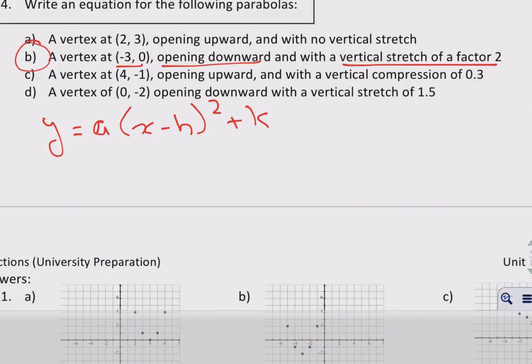In other words, I know that my h is negative 3, so that becomes positive 3. Remember, it's always going to be the opposite of the x coordinate. My k value is 0, so I'll just replace that with a plus 0, which does nothing.